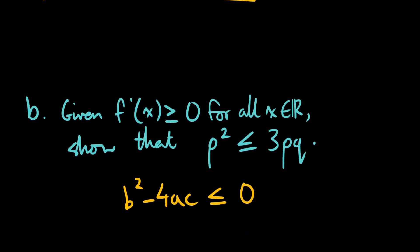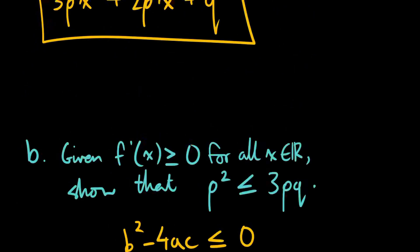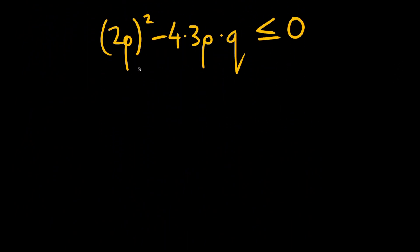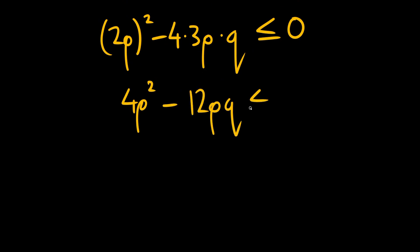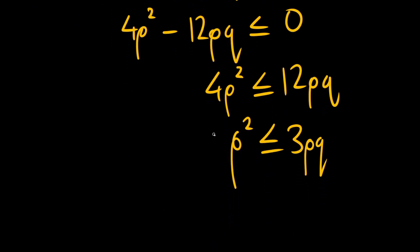Looking at our b term, we have 2p squared minus 4 times our a term, which is 3p, times our c term, which was q, should be less than or equal to 0. So we'll get 4p squared minus 12pq less than or equal to 0. Moving that over: 4p squared less than or equal to 12pq. Dividing both sides by 4, we get p squared is less than or equal to 3pq, which is the same as the answer.